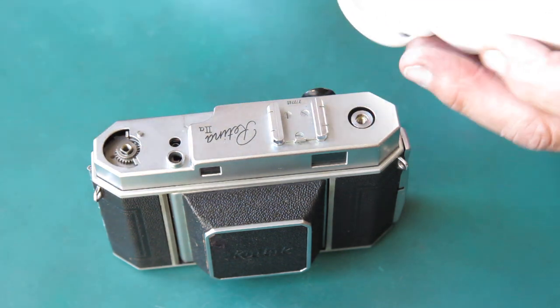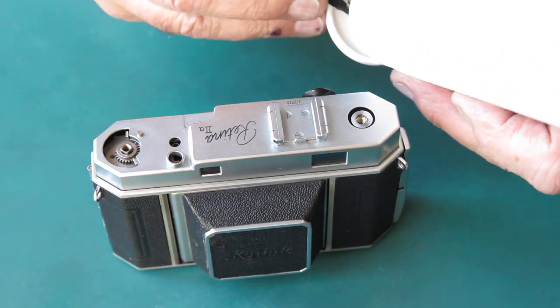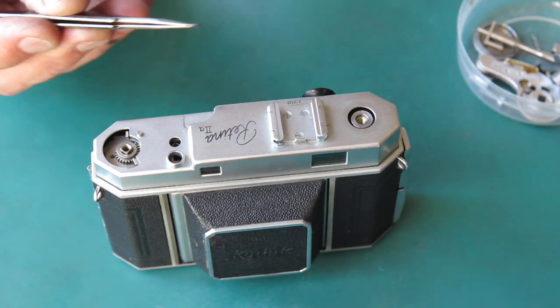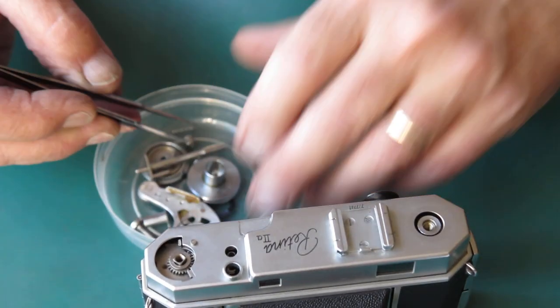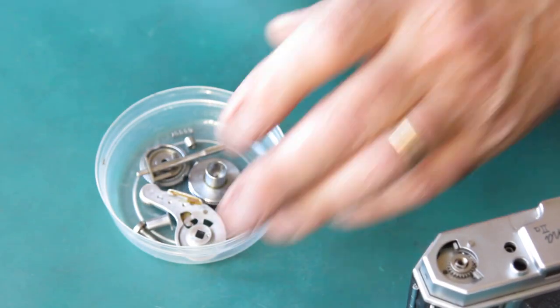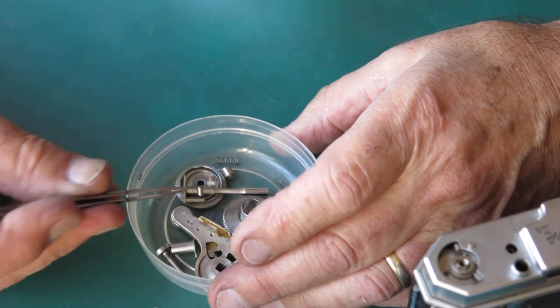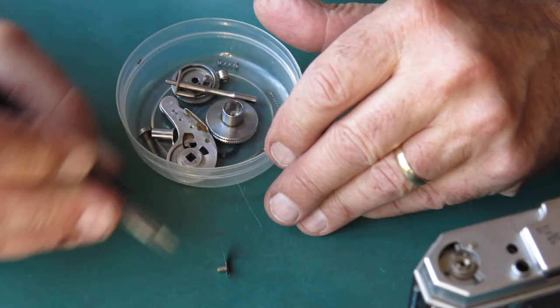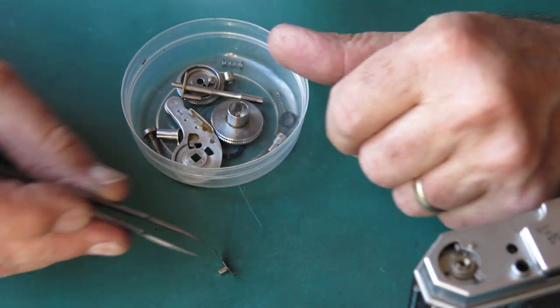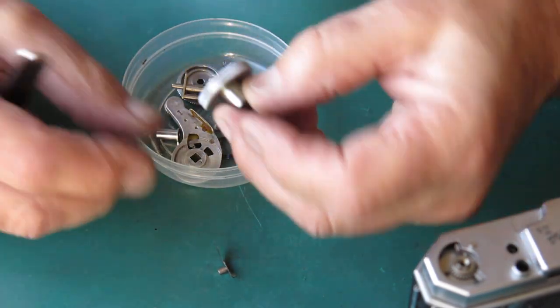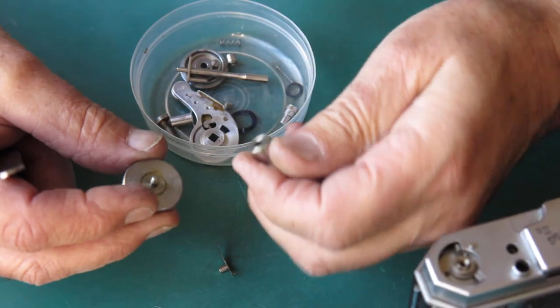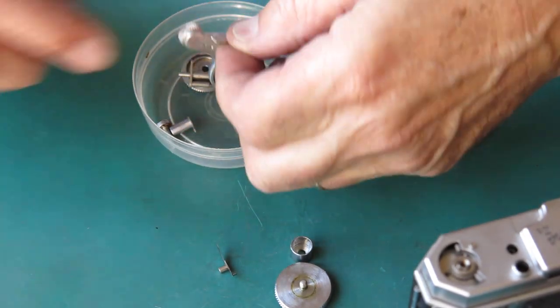There's something heavy in there. That's the rewind knob, and a stray washer here from the top of the film advance, I'd say. Let's inspect the selection of bits. A frame counter spring, which is entire. That's always a bonus. The rewind knob, it's all stuck with grease, but it's complete.